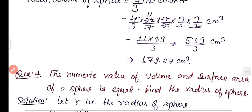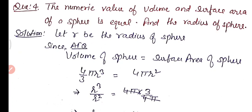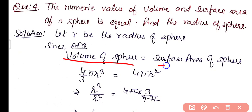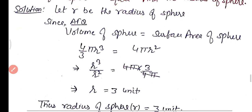Practice question 4: the numerical value of volume and surface area of a sphere are equal; find the radius. Let r be the radius. Since volume = surface area: 4/3 π r³ = 4πr². Transferring r² to the left and 4/3 π to the right: r³/r² = 4π × (3/4π). The 4π cancels on both sides, giving r = 3 units. Thus the radius of the sphere equals 3 units.